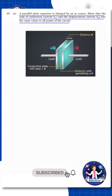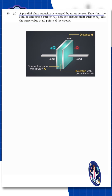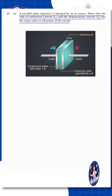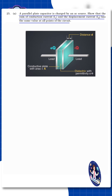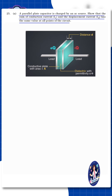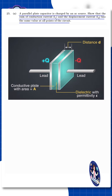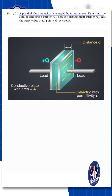In this question, a parallel plate capacitor is charged by an AC source. We already know that a capacitor charged by an AC source has two metal plates with a small air gap or a dielectric medium between them. The two plates are flat and separated by a small distance. That is the parallel plate capacitor.